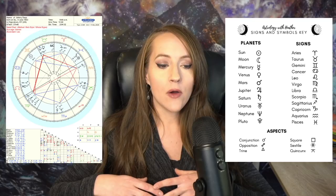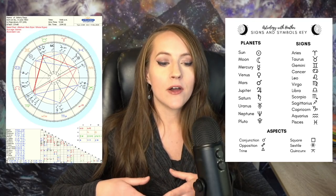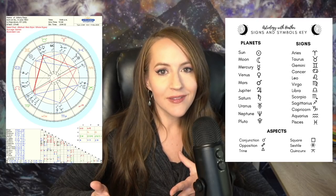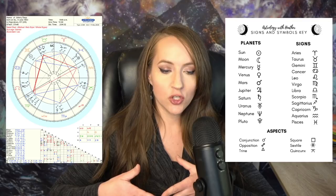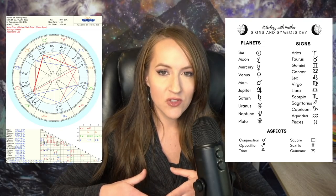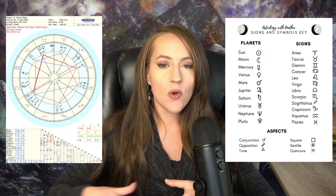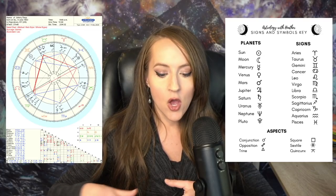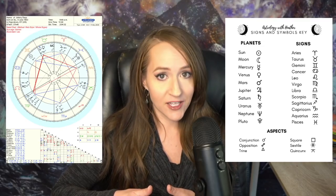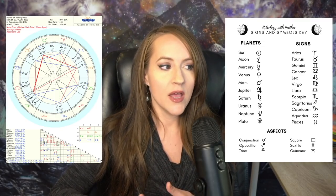The outer planets are more interpersonal and transformational — they represent how you engage with bigger, broader life themes, other people, other cultures and societies, and on a more psychological or transpersonal level. These are going to be more generational when it comes to their sign influence. Especially after you get past Mars, pay very close attention to the house these planets show up in, because that's what's more unique to you. For example, Uranus transits a sign for roughly eight years, so everyone born within eight years of you has the same Uranus sign. What makes your Uranus placement unique is the house placement and the planetary aspects, which is the next thing we're going to look at.